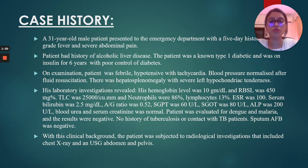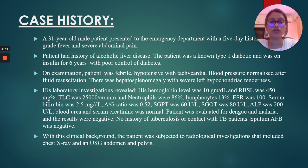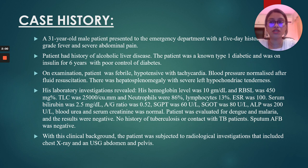Laboratory investigations revealed a hemoglobin level of 10 grams per deciliter, RBSL of 450 mg%. The total leukocyte count was elevated to about 25,000 per cubic millimeter, of which neutrophils comprised 86% and lymphocytes were 13%. ESR was 100. Serum bilirubin, SGOT, SGPT, and ALP were all raised. Albumin-globulin ratio was reversed. Blood urea and serum creatinine were normal. The patient was evaluated for dengue and malaria — results were negative. No history of tuberculosis or close contact was noted, and sputum AFB was negative. With this clinical background, the patient was subjected to radiological investigations including chest X-ray and ultrasound of the abdomen and pelvis.